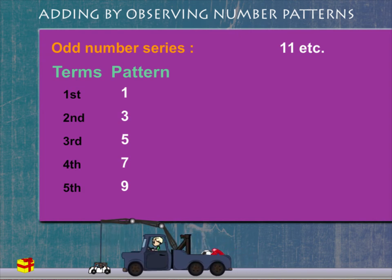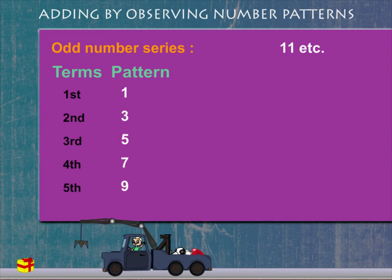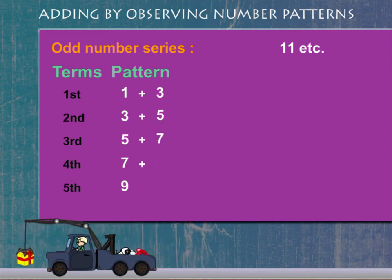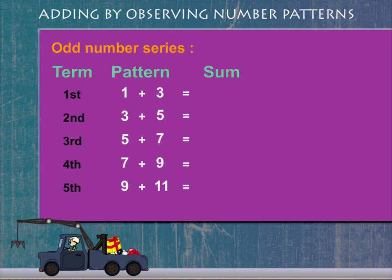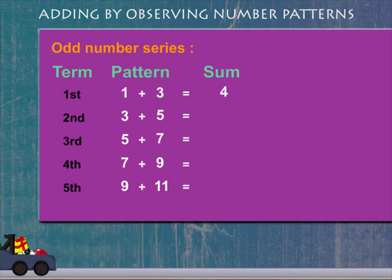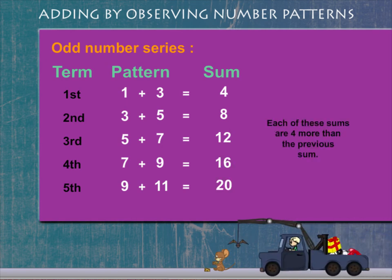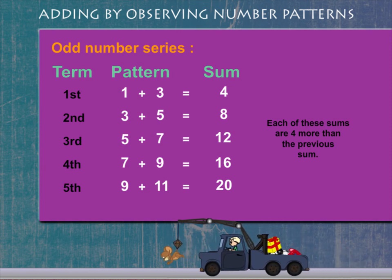Now, if we add two consecutive odd numbers like 1 plus 3, 3 plus 5 and so on, we get the sum as 4, 8, 12, 16, 20. Each of these sums are 4 more than the previous sum.